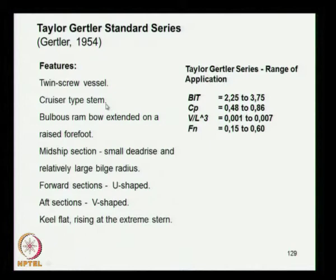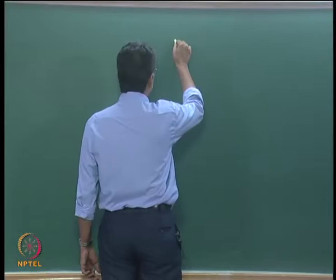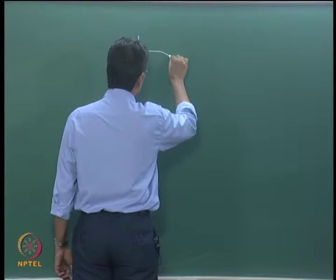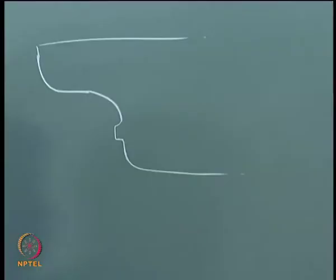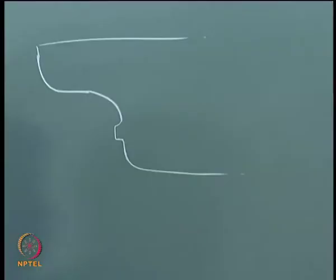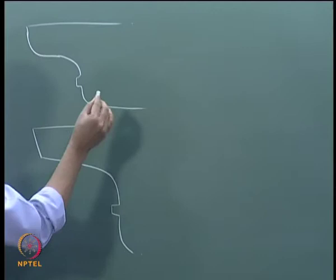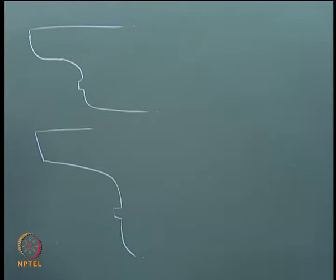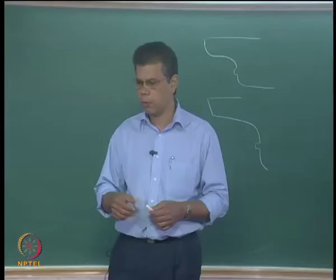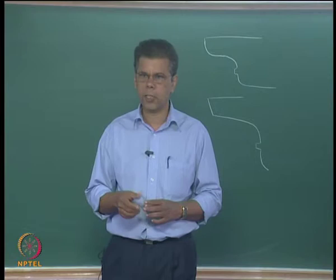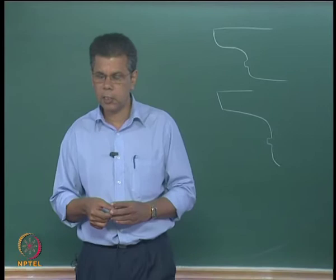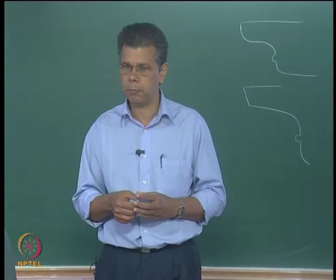The type of stern considered is the cruiser stern. The cruiser stern is the conventional type, whereas the transom stern is a relatively new evolution of ship form at the aft. The ship used in this series has a cruiser stern.